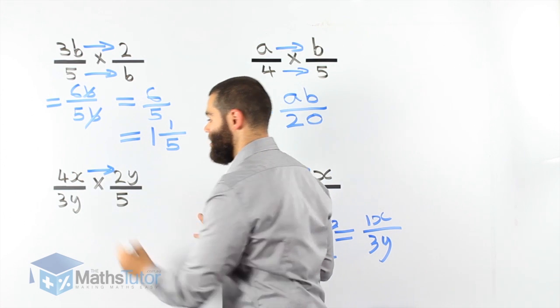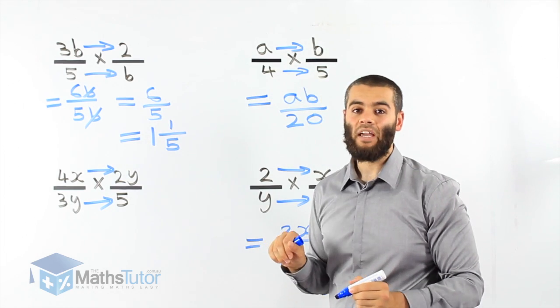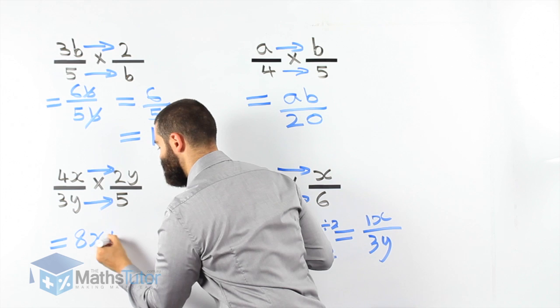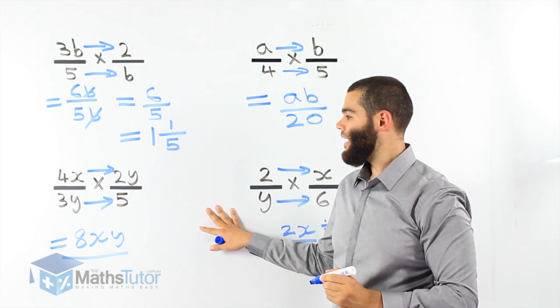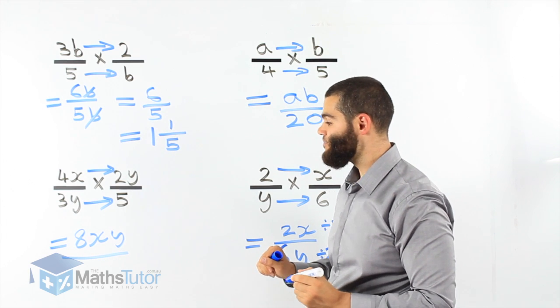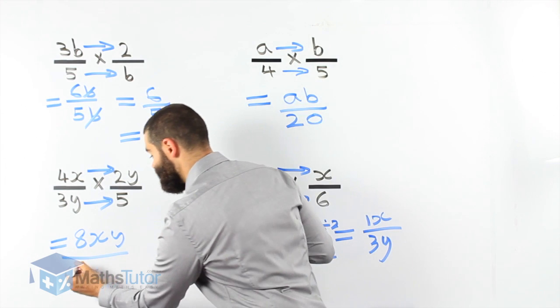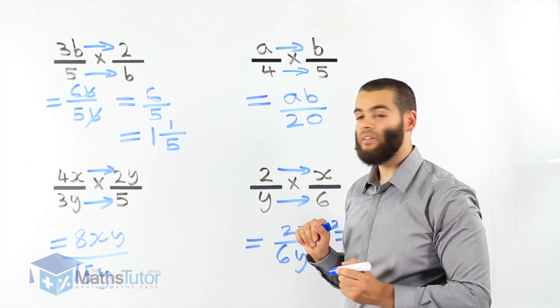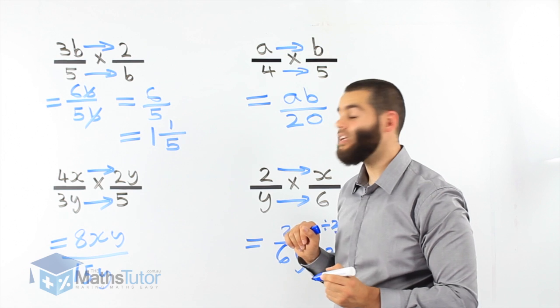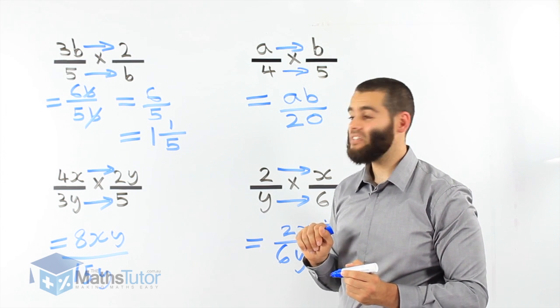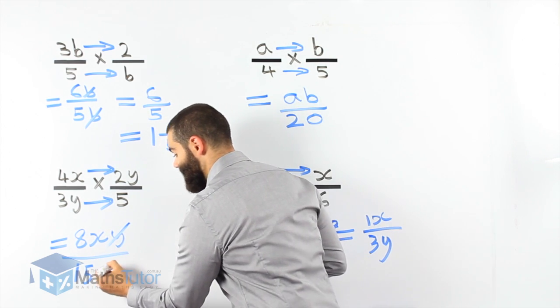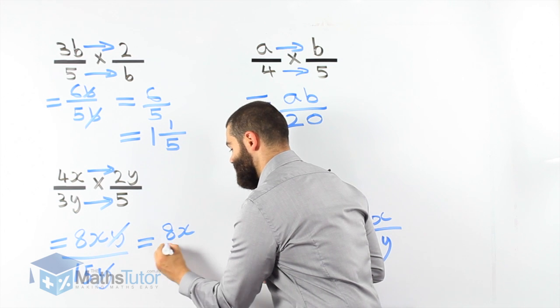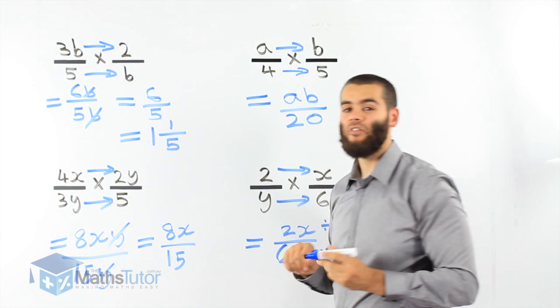Top times top and bottom times bottom. 4x times 2y. 4 times 2y is 8xy. And 3y times 5. 3y times 5 is 15y. Can we simplify this? 8xy over 15y. Yes, we can. What cancels out? The y's do. See you later. And see you later. We're left with 8x over 15. That is our final answer.